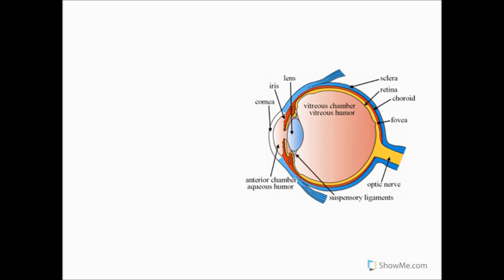As light passes through the eye, it first reaches the cornea. The cornea is the transparent covering over the iris, pupil, and anterior chamber. The cornea works with the lens to focus light through the eye.